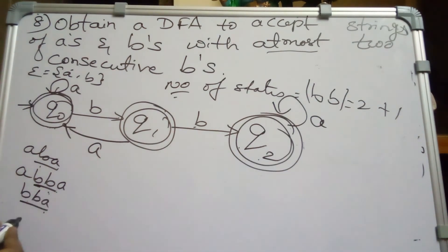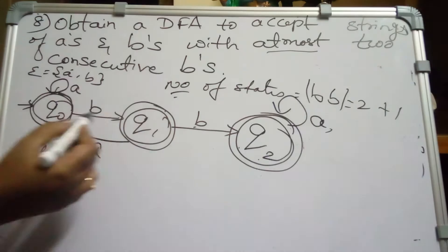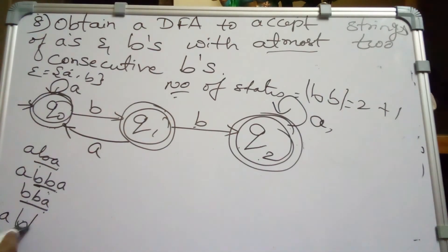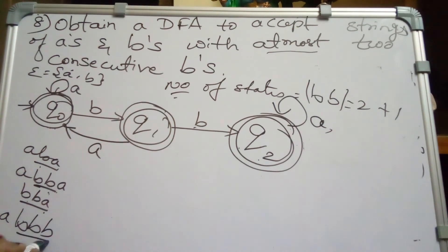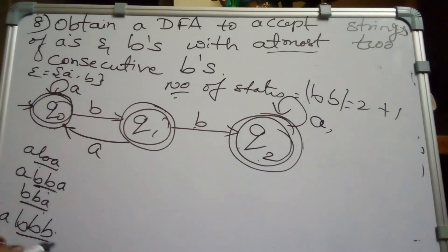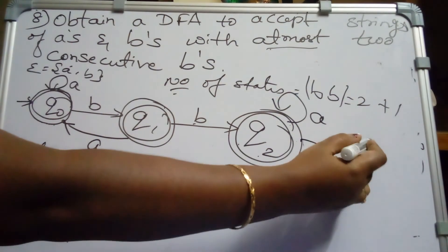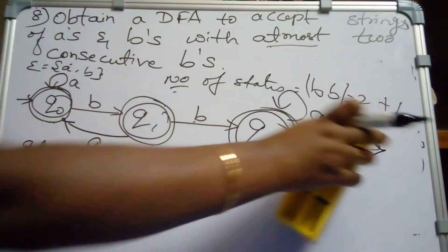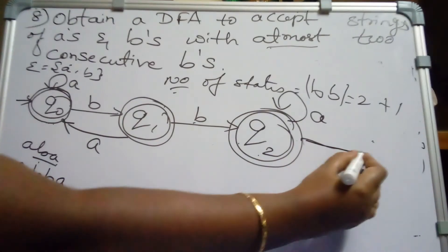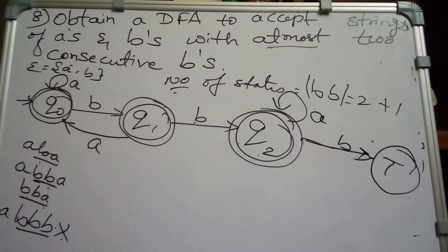For Q2 on B: if we loop here, then a string like ABBB with three consecutive B's would be accepted, which violates our condition. So instead of looping, Q2 on B moves to the trapped state. On reading a third B the DFA moves to the dead state.